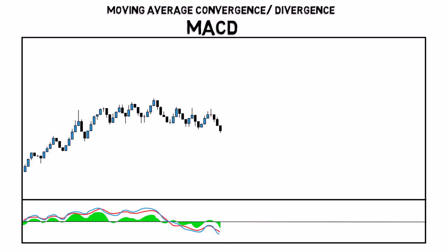MACD consists of four components: a faster moving average and a slower moving average.